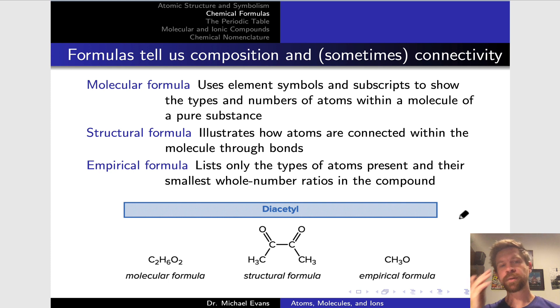Three different types of formulas we will see in this course. Molecular formula uses element symbols and subscripts to show the types and numbers of atoms within a molecule of a pure substance. For a compound like diacetyl, which gives beer and other foods a buttery flavor, the molecular formula is C2H6O2. The way it's written tells us that it's made of three elements: carbon, hydrogen, and oxygen.